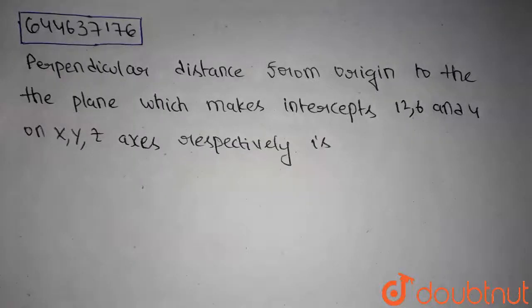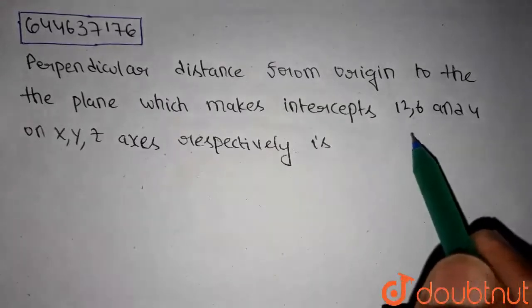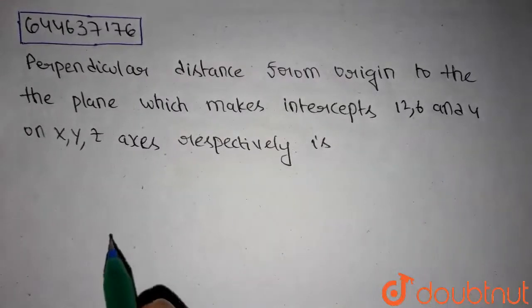Hello guys, this is our today's question. We have to find the perpendicular distance from origin to the plane which makes intercepts 12, 6 and 4 on x, y, z axis respectively.